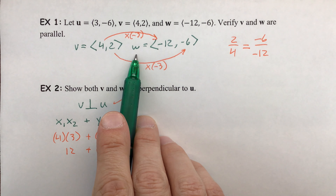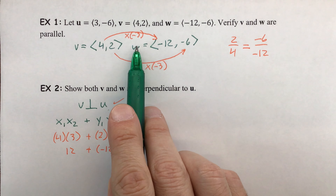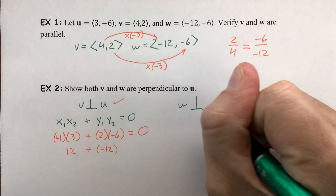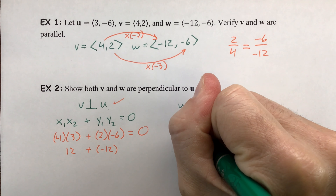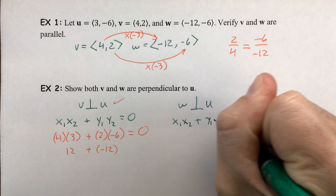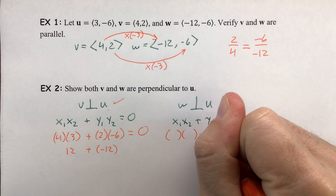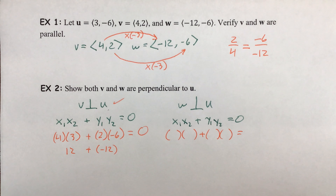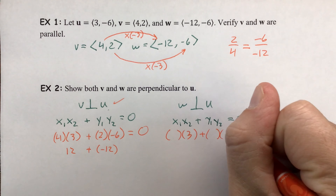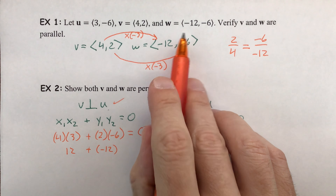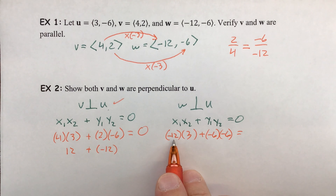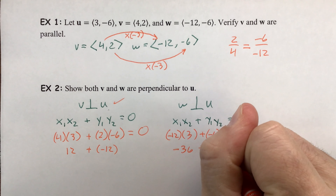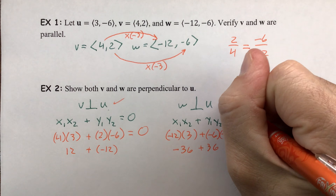If v is parallel to w and v is perpendicular to u, then logically w is going to be perpendicular to u. We'll go ahead and write that up as well — good practice. Using the same template with u's components (3, -6) and w's components (-12, -6): negative 12 times 3 gives negative 36, and negative 6 times negative 6 gives positive 36, which does become 0 — so w and u are perpendicular.